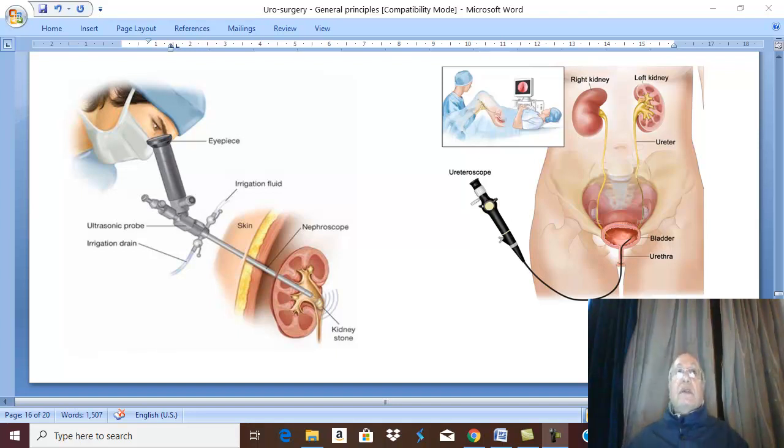Treatment of urinary stones and most urinary tract diseases usually involves three lines of treatment: conservative medical treatment, instrumental treatment by UT endoscopy, nephroscopy, cystoscopy, ureteroscopy, etc., and open surgery.